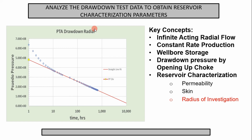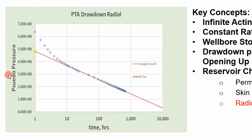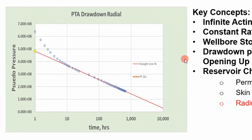This shows a plot of pseudo pressure versus time. When we plot our pressure data, which varies with time, we want to convert our pressures to pseudo pressure. For gas wells, pseudo pressure takes into account the change in gas fluid properties, making it more accurate. When you're dealing with gas data, you always want to use pseudo pressure.